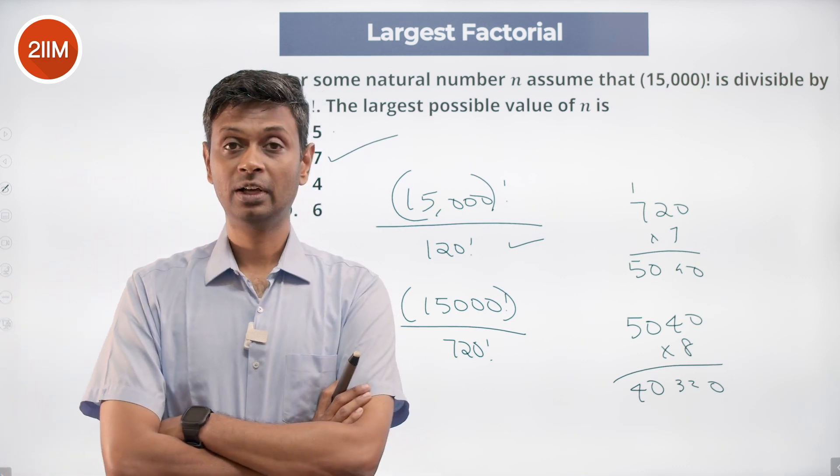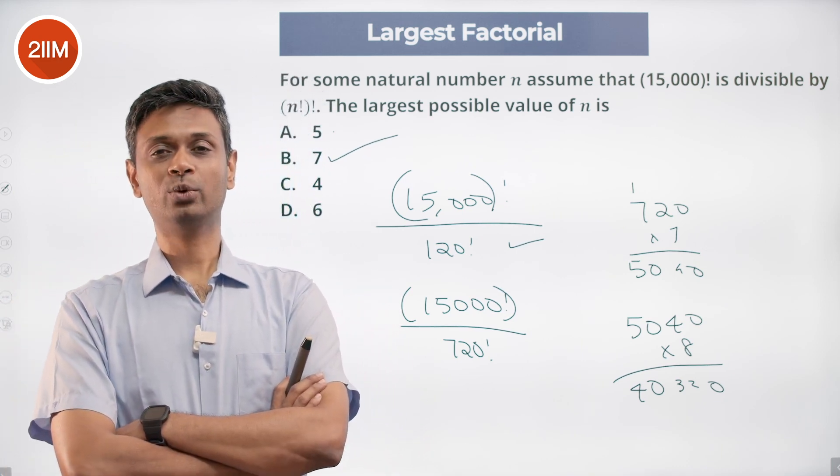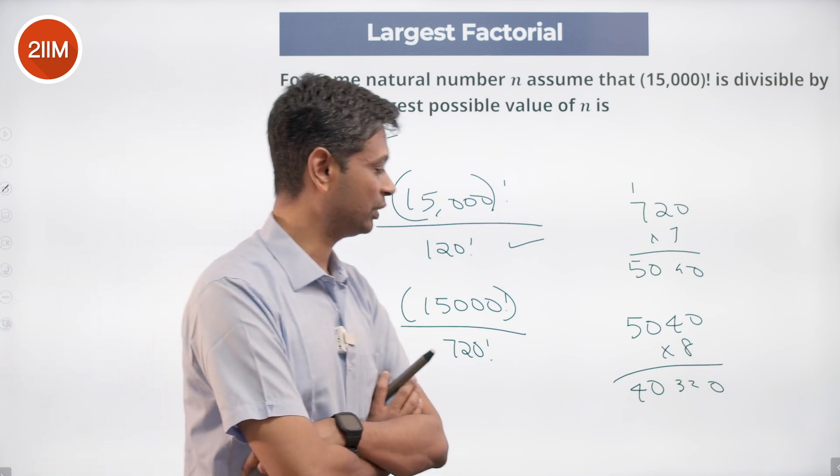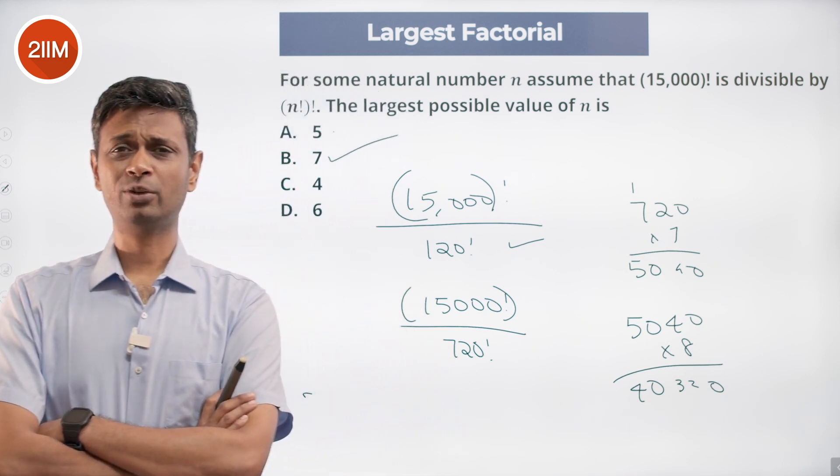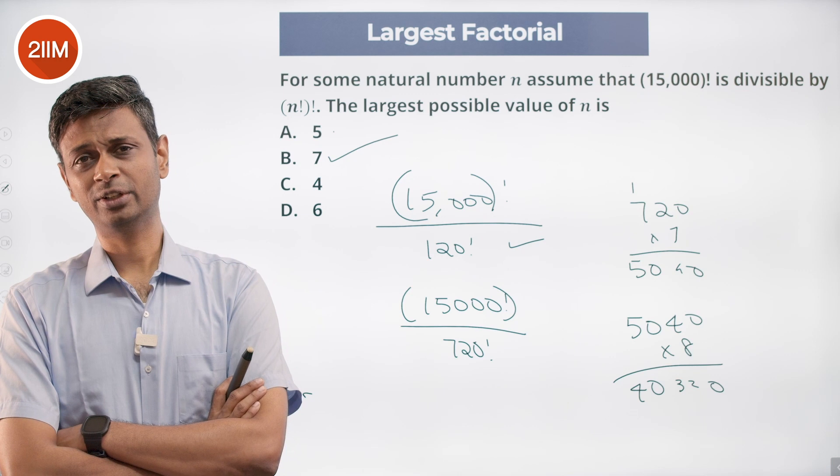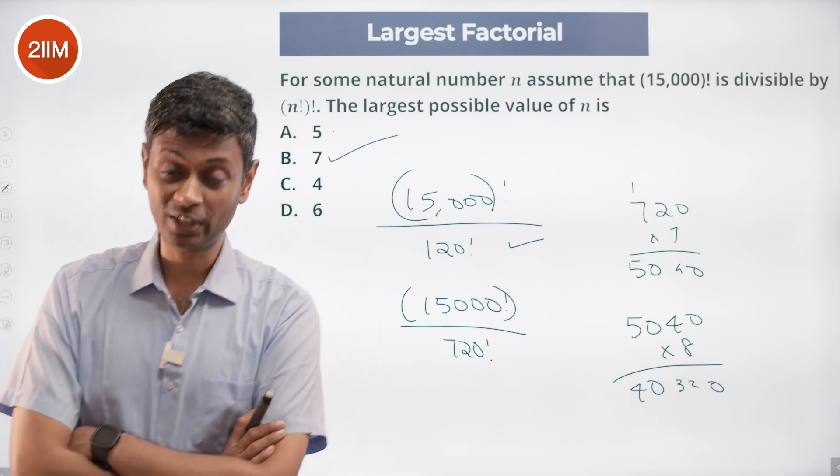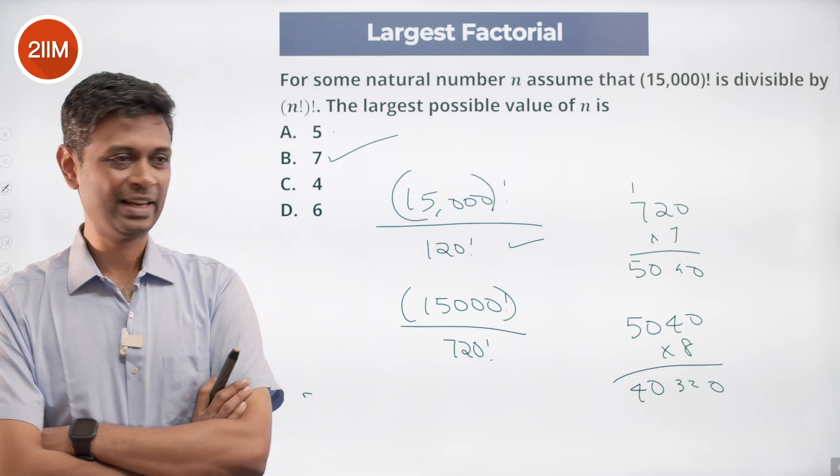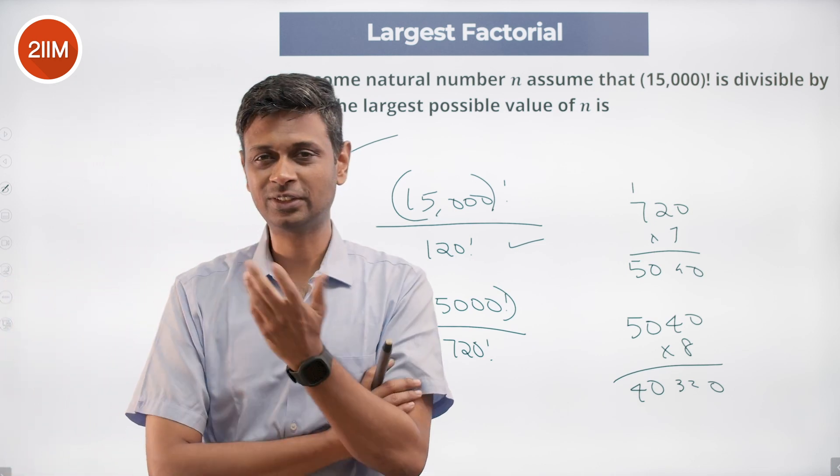8 factorial factorial is more than 15,000, 7 factorial factorial is less than 15,000. That's all we need to find out here too.